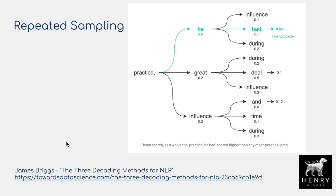The key technical novelty behind this Codex paper is repeated sampling. This works well because you have concrete unit test evaluation — you generate 100 different samples and filter them based on which ones pass the unit test. The probabilistic model fills out the masked token in the sequence with different probability densities on different continuations. For example, 'he' gets 60% probability, 'gray' 20%, and 'influence' 20% as continuation of 'practice, [MASK].'